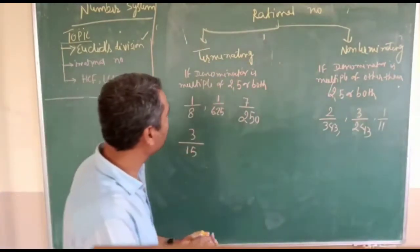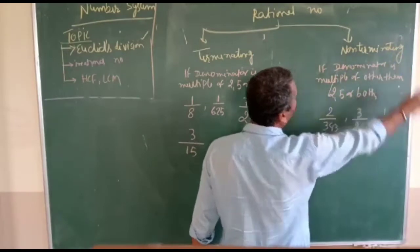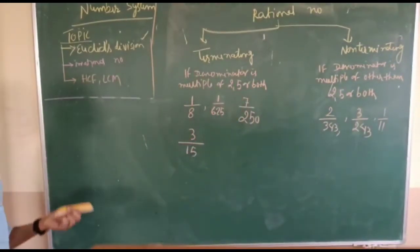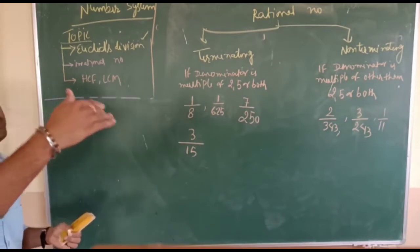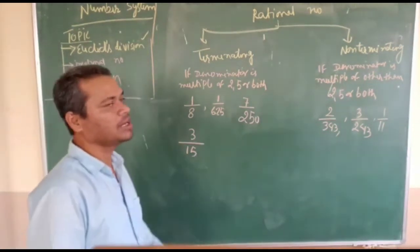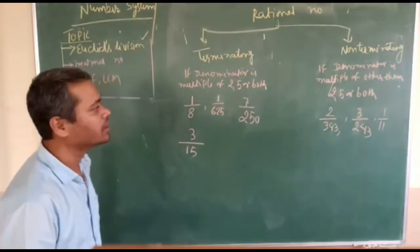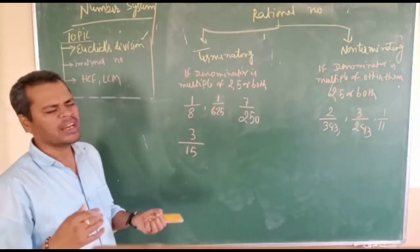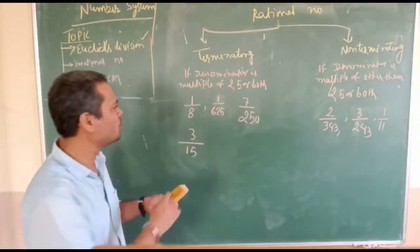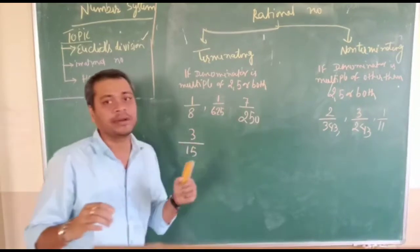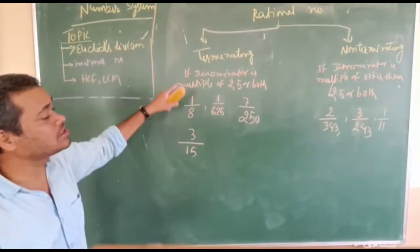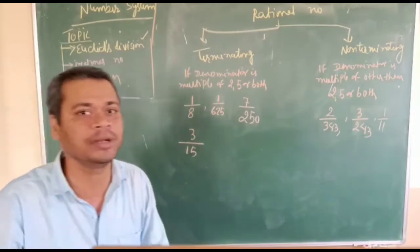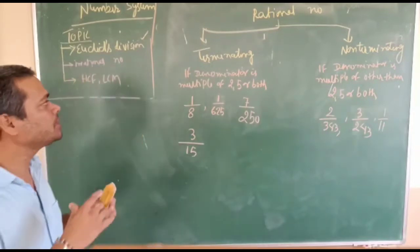Two parts: one is called terminating and another one is called non-terminating. What does terminating mean? The decimal number which ends. What does non-terminating mean? The decimal number which does not end. So by seeing any number in the fraction form only, can we determine that a fraction is terminating or not terminating?